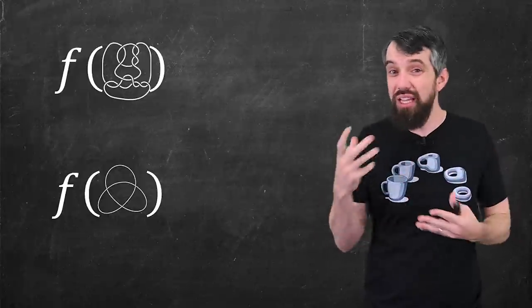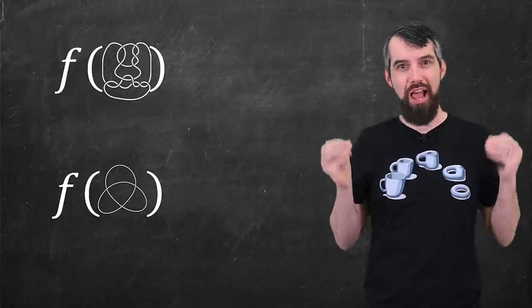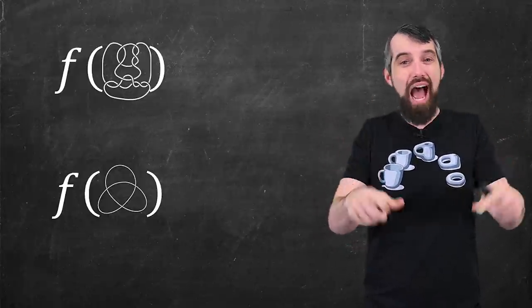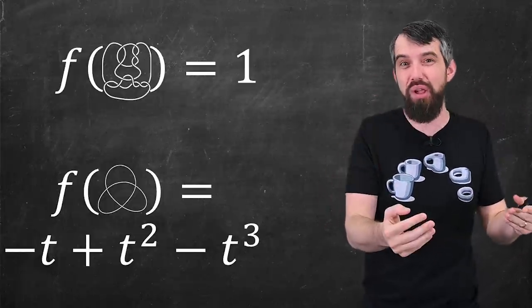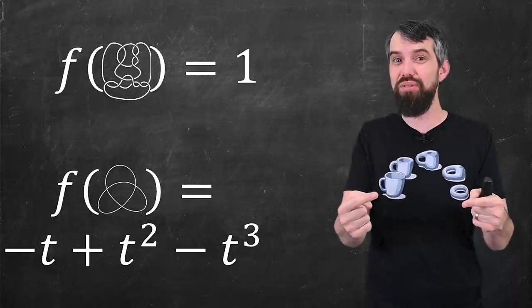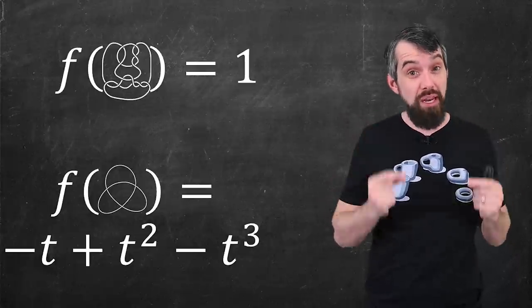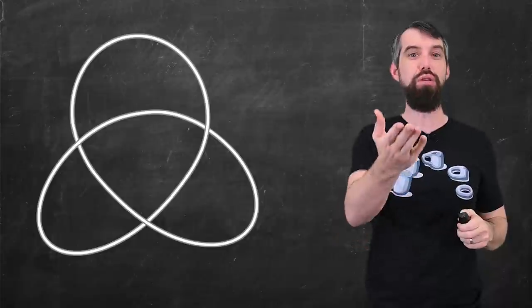Some type of calculation or manipulation I can do that inputs two different knots and outputs, well, something. Maybe a number, maybe a polynomial. And if those outputs are different, then it's going to imply that the inputs are different as well.